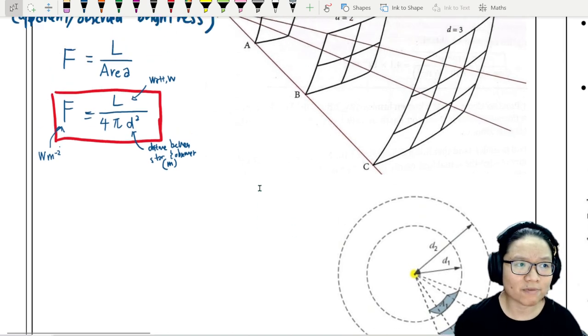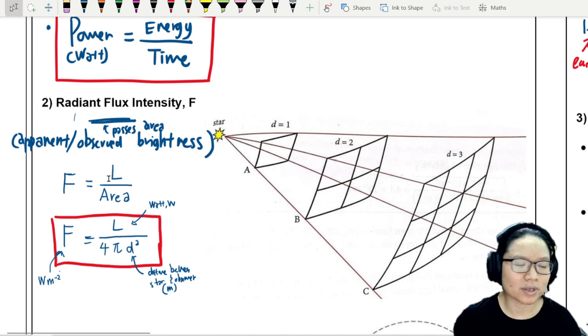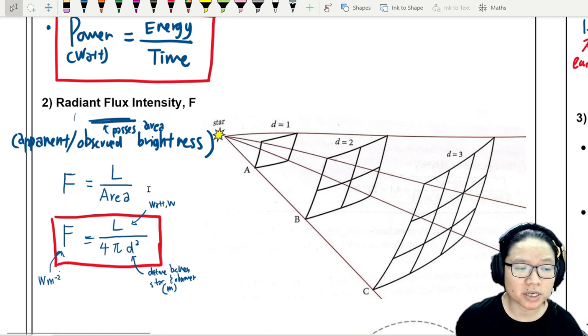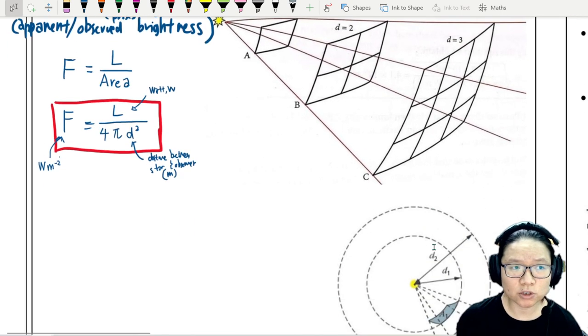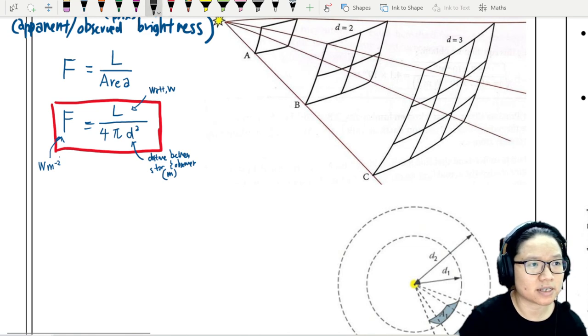So if I want to look up for intensity, which is radiant flux intensity, I will take power per unit area, or in this case, it would be luminosity per unit area. And this area here will be the area of a sphere.